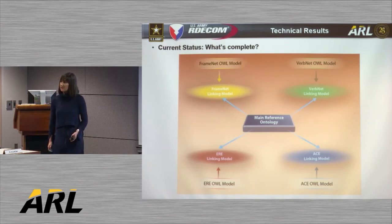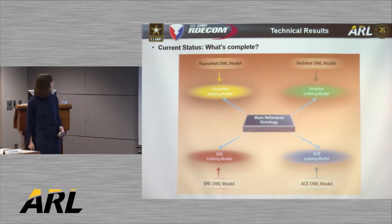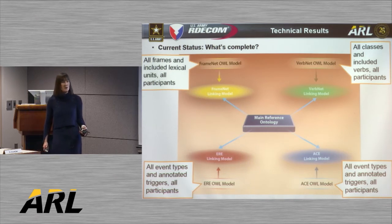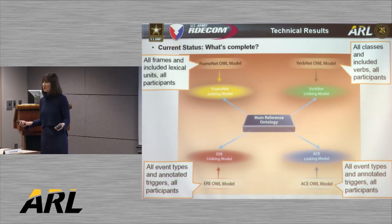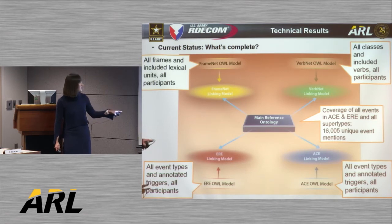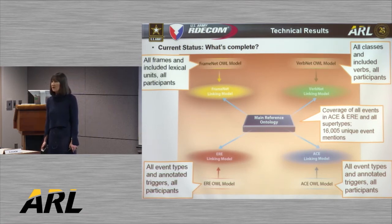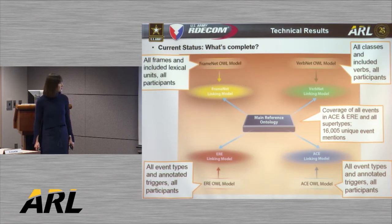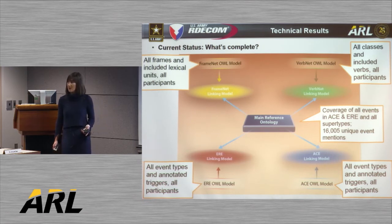As part of a basic refresh project in its first year, the ontology is still under development. We've completed all of our OWL resource models with all events included in those resources, event mentions falling into a particular class, and all participants associated with a class. Within our main reference ontology, we've provided coverage for all types of events found in our ACE and ERE resources — events of interest to the DOD community, for example conflict and justice events. Across all of our ontologies, we now have over 16,000 unique event mentions.